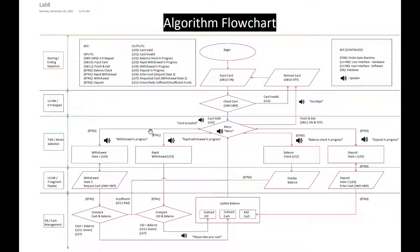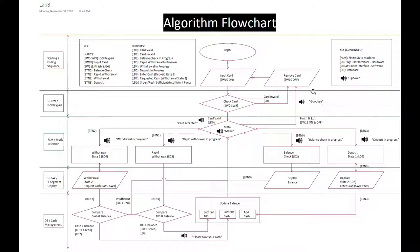They will now reach the menu stage, which is our finite state machine. This is also the start of our user interface hardware portion, where we have our zero through nine keypad represented by switches zero through nine. In the menu we have five decisions the user can make. They can go to withdrawal, rapid withdrawal, balance check, deposit, or finish and exit. If they press finish and exit, the machine will say goodbye until they remove their card.